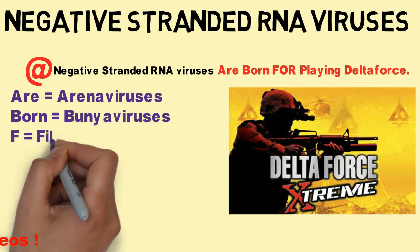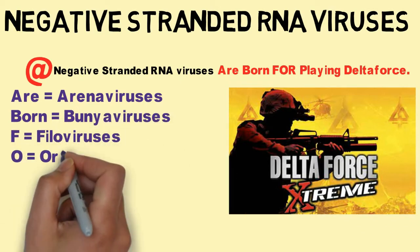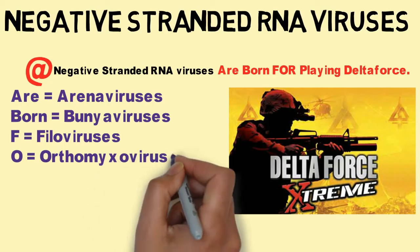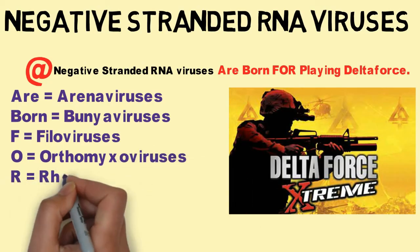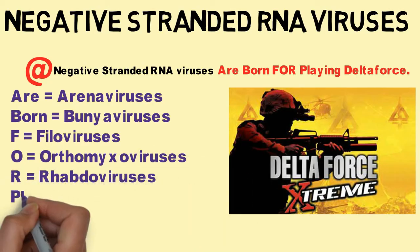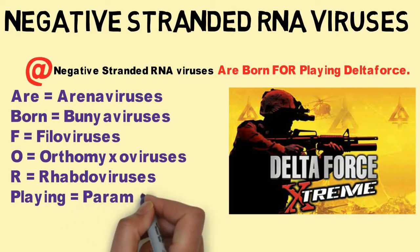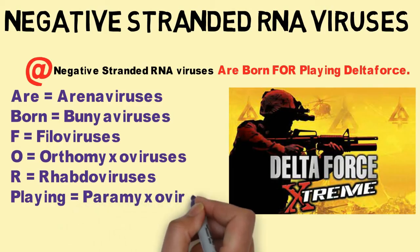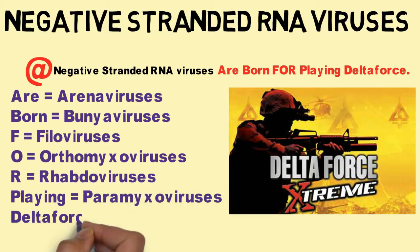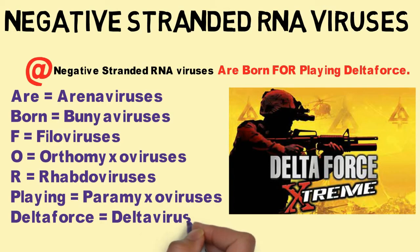Continuing the mnemonic: F is for Filoviruses, O is for Orthomyxoviruses, R is for Rhabdoviruses, and Delta Force is for Delta viruses. Together spelling out the negative-sense RNA virus families.